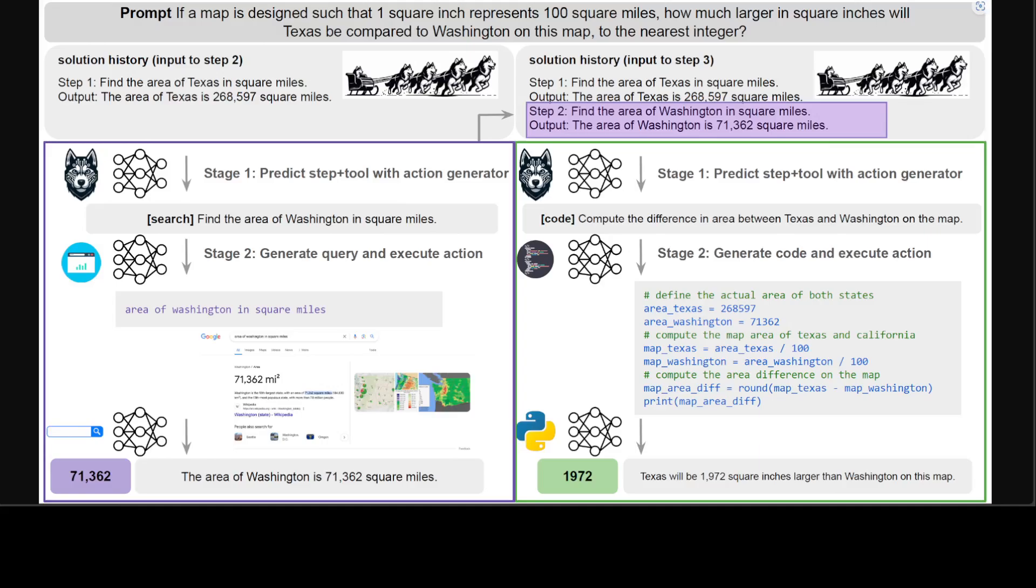Meanwhile, recent open source LLMs focus on specific tasks such as multi-hop QA or employ convoluted procedures for training data curation and agent inference. Husky is a unified open source language agent that solves complex multi-step reasoning tasks by decomposing each task into a series of executable actions.